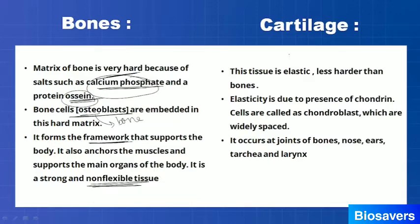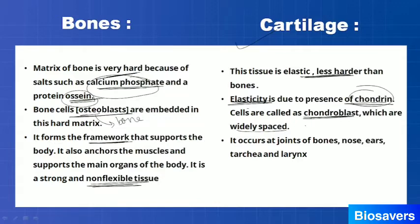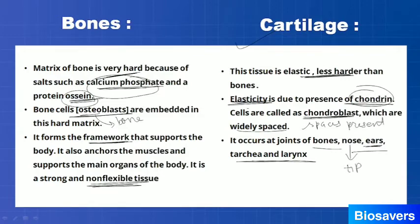The second component of skeletal tissue is cartilage, which is comparatively less hard than bone. Cartilage contains a chemical substance that provides elasticity to it. The cells of cartilage are called chondroblasts, and they are also widely spaced with intercellular spaces present. Cartilage occurs at the joints of bones, nose, ears, trachea, and larynx. The soft part at the base of the ear and the tip of the nose are examples of cartilage.